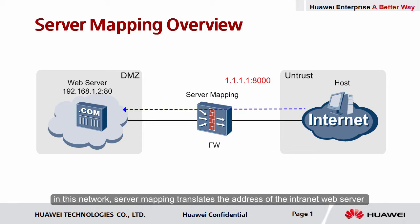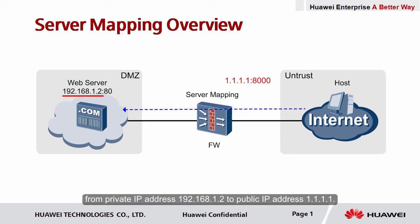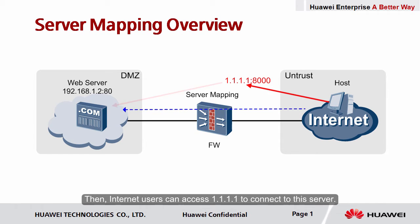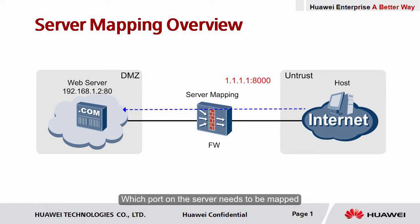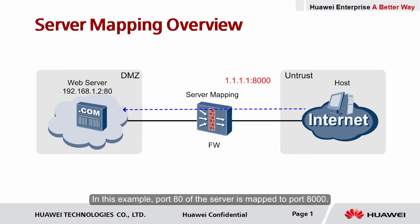For example, in this network, server mapping translates the address of the internet web server from private IP address 192.168.1.2 to public IP address 1.1.1.1. Internet users can then access 1.1.1.1 to connect to this server. Which port on the server needs to be mapped, and what the port is mapped to, are configurable. In this example, port 80 of the server is mapped to port 8000.